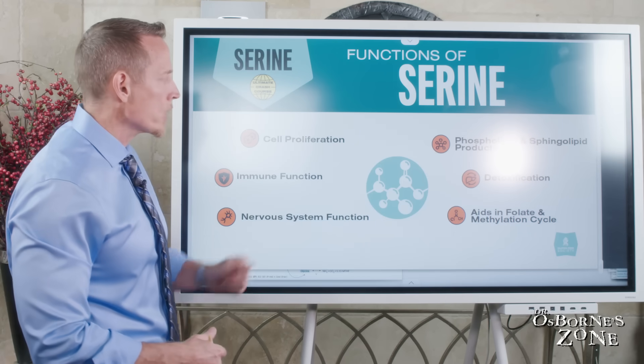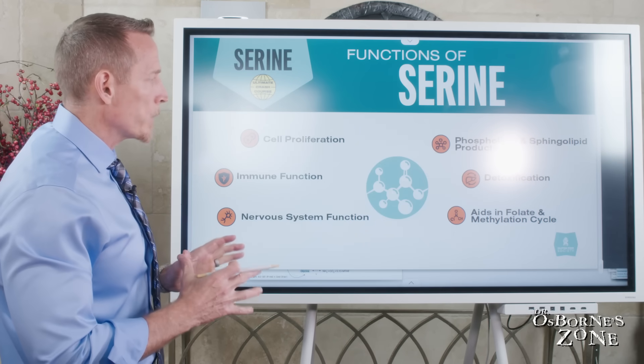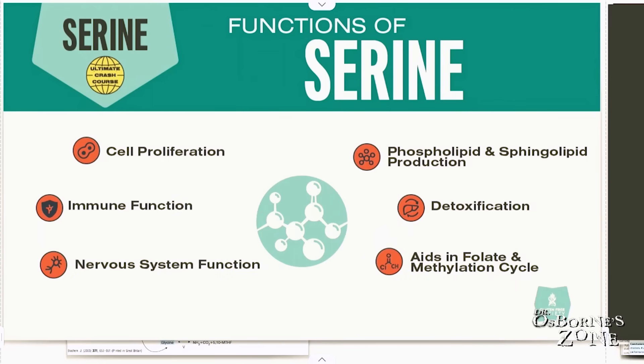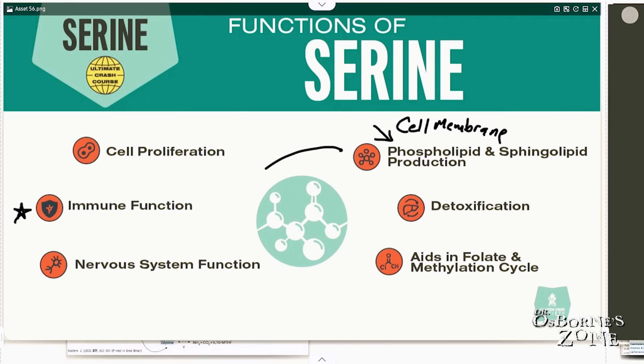If we look at some of the functions of serine, it really plays a central role in a lot of biochemistry. You see it plays a role in cell proliferation, so how cells grow and make new cells. It plays a major role in immune system function, as well as nervous system function. If you ever heard this term phospholipid or sphingolipid, these are specialized fatty substances in the cell membranes of all of our cells, and they help with signaling as well as membrane fluidity.